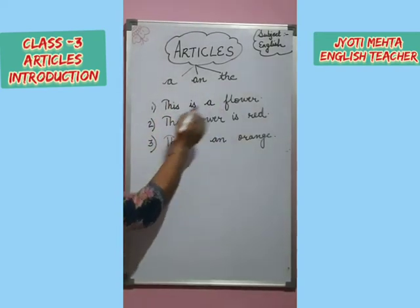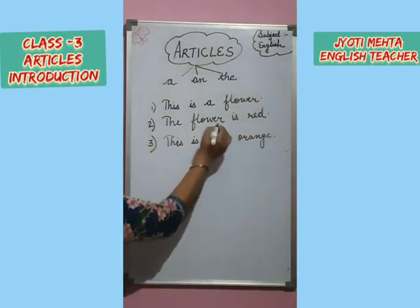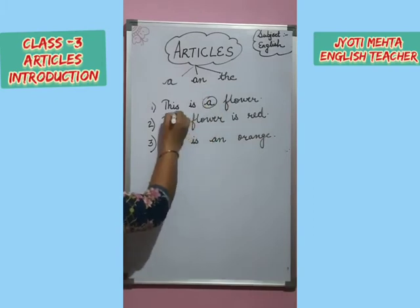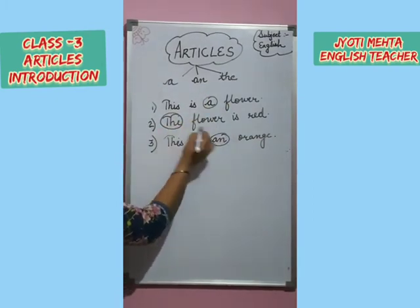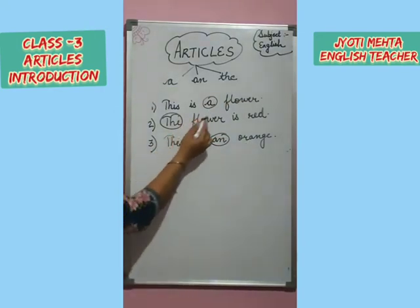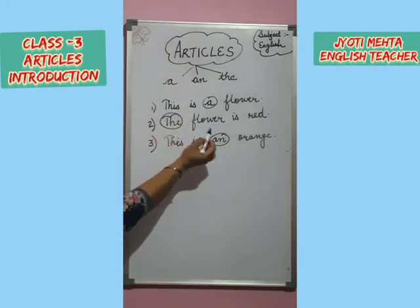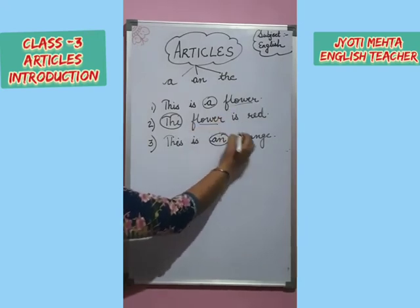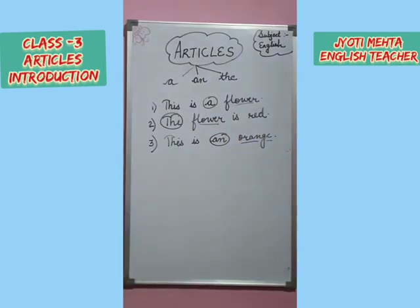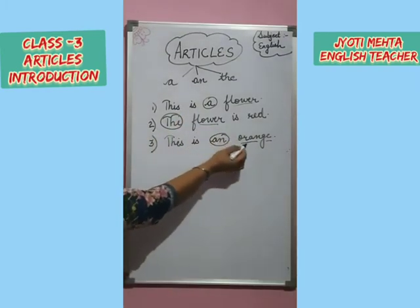This is a flower. The flower is red. This is an orange. So here, a, the, and an — they are used before a noun. They are used before a noun, and we have used a, an, and the to point out the nouns. Flower is a noun. Orange is a noun. So we have used a and the to point out the nouns flower and orange.